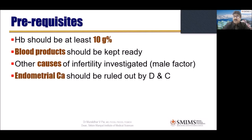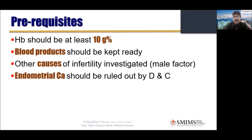Endometrial carcinoma is another coexisting condition. As you age — near 40 — in a fibroid uterus, you must rule out endometrial carcinoma, because hyperestrogenism is the common factor behind fibroid, endometriosis, adenomyosis, and endometrial carcinoma. It is mandatory to rule out endometrial carcinoma in every case of fibroid, especially from 30 years onwards.